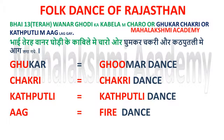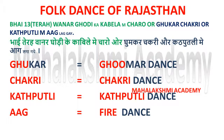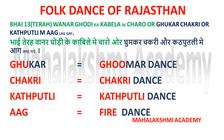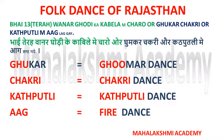Now we discuss the words ghoom kar chakri aur katputli mein aag laga gaye. Ghoom kar corresponds to Ghoomer dance, chakri is for the Chakri dance, katputli is for Katputli dance, and aag is for the fire dance, also known as Agni Nritya.